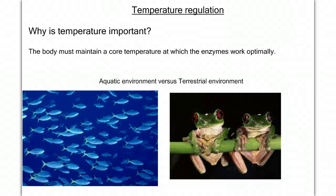I want to make a quick video on temperature regulation. In our unit on regulation, we've talked about the urinary system and regulating our ion levels, pH, blood pressure, and the waste and composition of our blood. But what about temperature? Why is temperature important? Well, we know that enzymes have a pretty narrow range of temperature in which they'll work optimally, so keeping temperature consistent or stable plays a big role in allowing our metabolism to work at the right rates that we need it to.